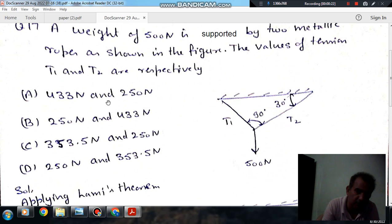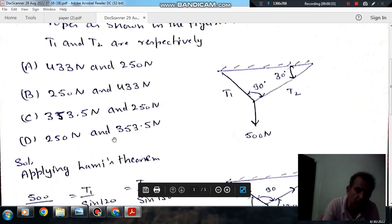Option A: 433 N and 250 N. Option B: 250 N and 433 N. Option C: 353.5 N and 250 N. Option D: 250 N and 353.5 N.